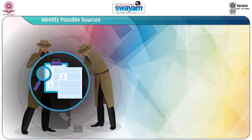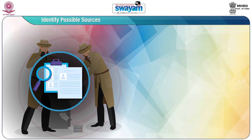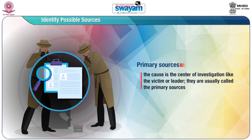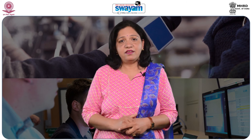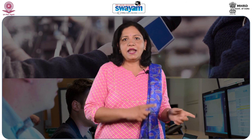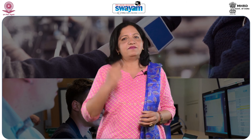Number two, identify possible sources. There are various sources from where information can be explored. Primary sources — often the cause is the center of investigation, like the victim or a leader. They are usually called the primary source. They are the best source as they provide accurate information. A journalist needs to be very careful while presenting information collected from primary sources, because sometimes it gives a one-sided picture.